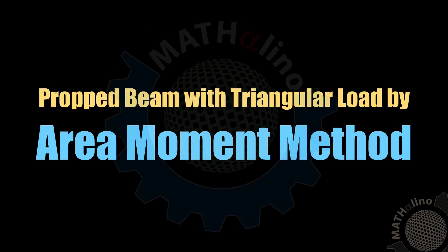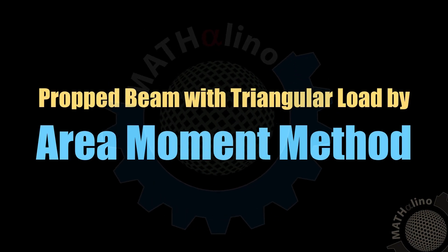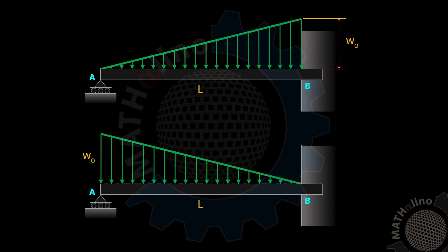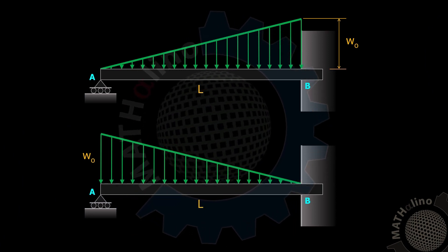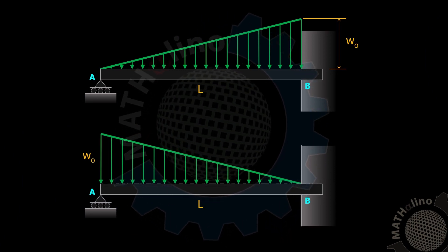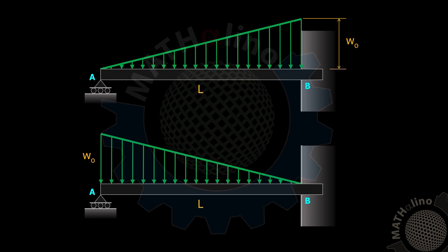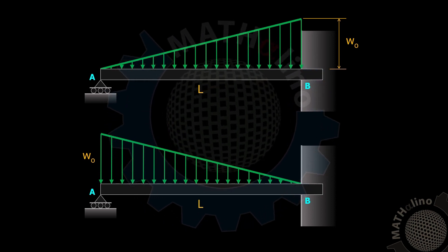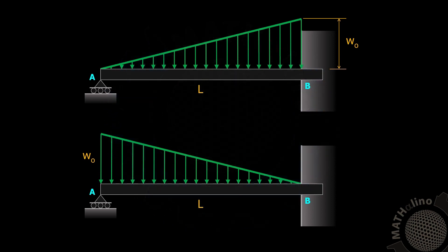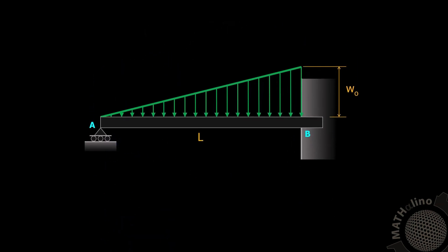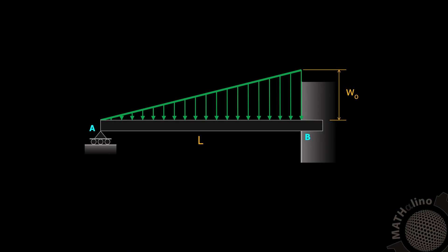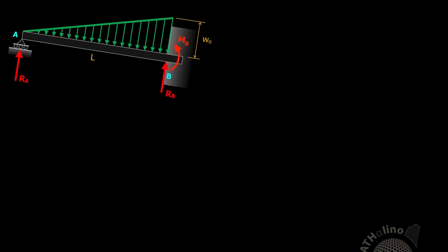We are required to solve for the support reactions of a propped beam loaded with triangular loadings throughout the span. One is uniformly increasing and the other is uniformly decreasing, from simple support to fixed support. Let us start with the linearly increasing load from zero at A to W-naught at B. We are going to solve for RA, RB, and MB.